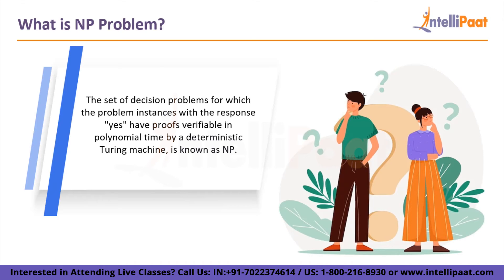Now let's see what exactly is the NP problem. NP is the set of decision problems for which problem instances with the response yes have proofs verifiable in polynomial time by a deterministic Turing machine, or equivalently, the set of problems that can be solved in polynomial time by a non-deterministic Turing machine — hence the abbreviation NP, meaning non-deterministic polynomial time. These two definitions are equal because the Turing machine method consists of two phases: a non-deterministic guess of the answer, followed by a deterministic algorithm that checks if the guess is a solution.